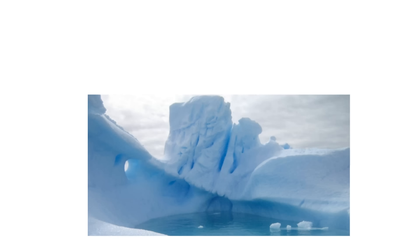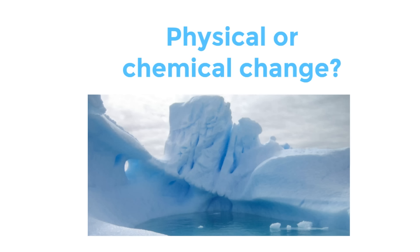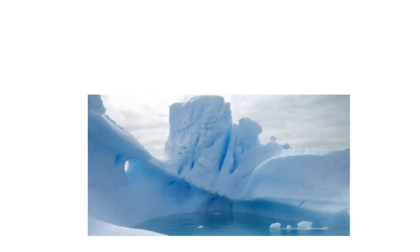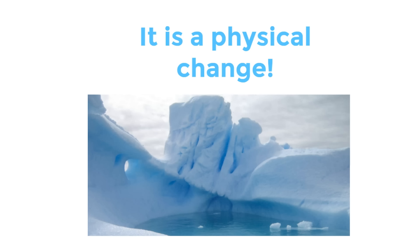The last example we want to give today before we finish is with ice changing into — or melting into — water. What kind of change is that? Well, ice is the frozen version of water, so it's still the same type of matter. When ice melts, that is still considered a physical change. Even though the state of the matter has changed from solid to liquid, it's still a physical change because it's the same type of matter.